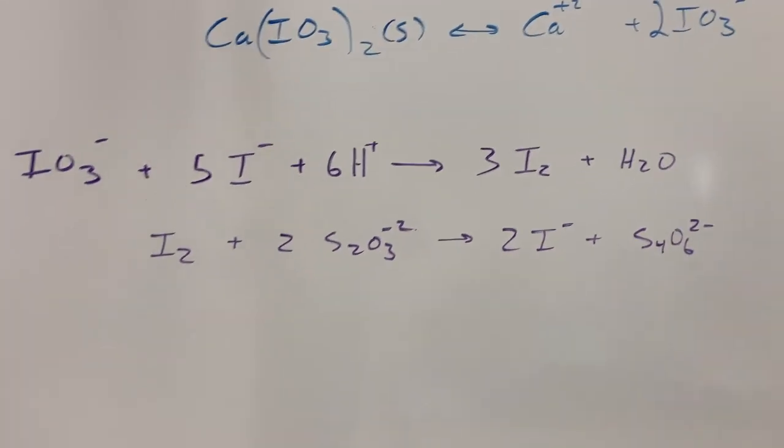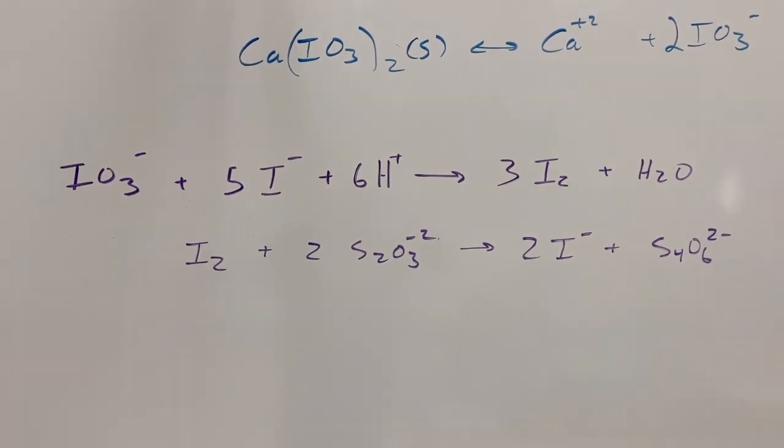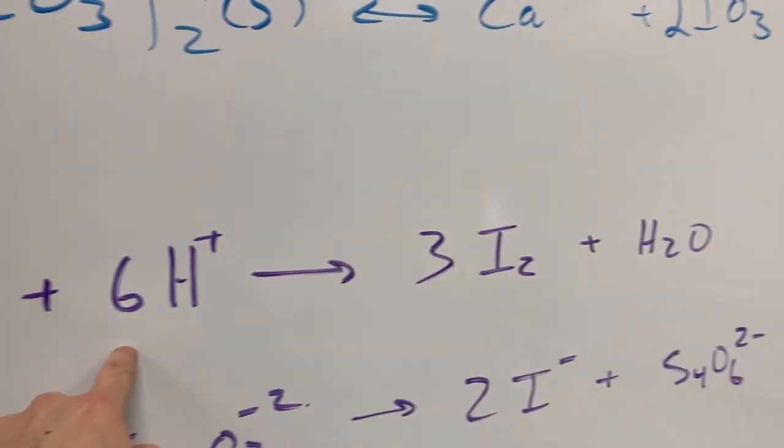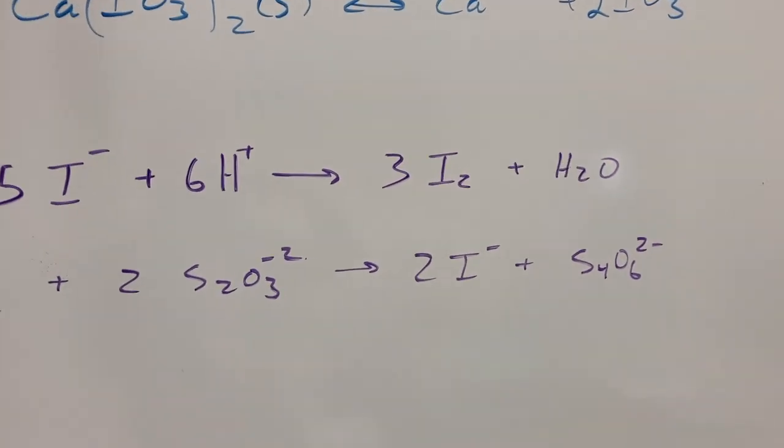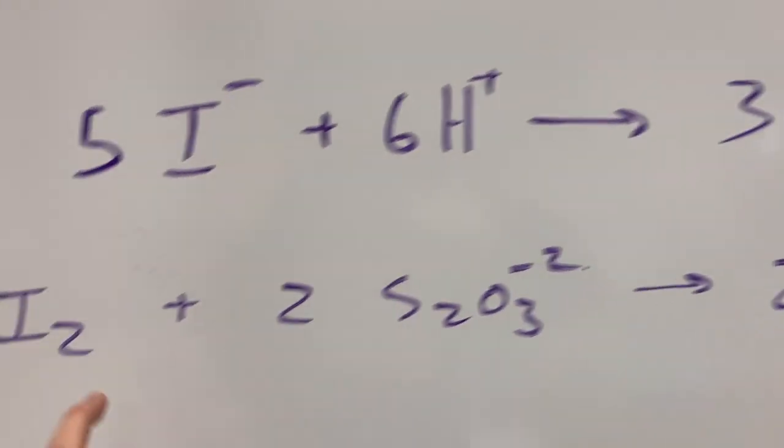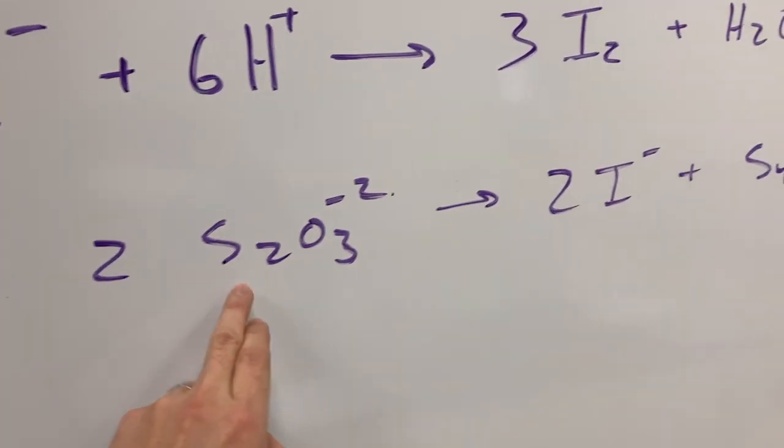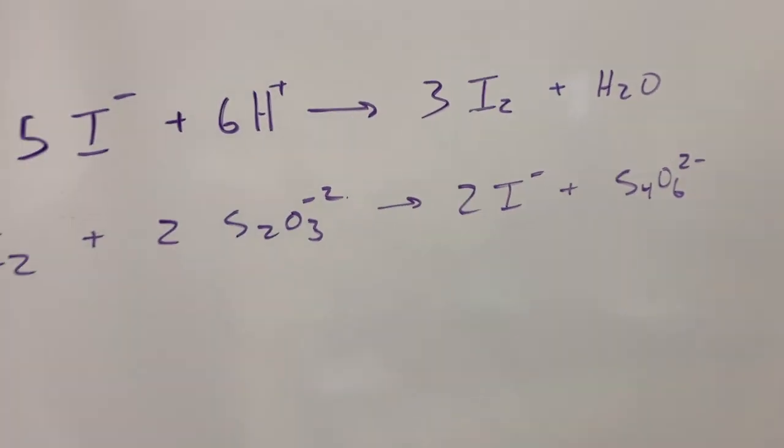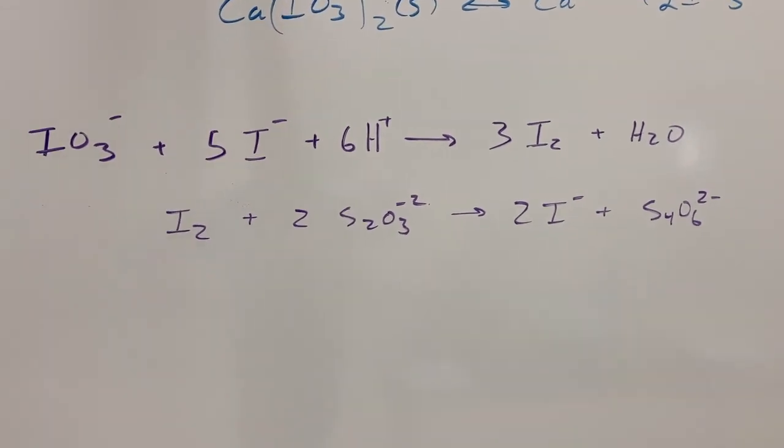The reaction that we're going to undergo is reacting the iodate with iodide and we have an acidic environment. This of course is a redox reaction. The formation of iodine as an intermediate will be consumed reacting with the thiosulfate to produce iodide, and once this reaction is complete there will be a visual indication so we'll know when to stop titrating.